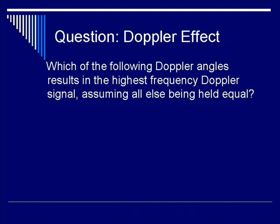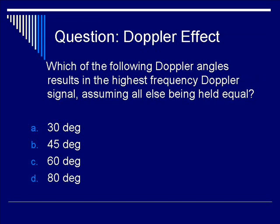Let's end this segment on a question: which of the following Doppler angles results in the highest-frequency Doppler signal, assuming all else being held equal? A: 30 degrees; B: 45 degrees; C: 60 degrees; or D: 80 degrees? The answer is A — 30 degrees — because cosine of 30 gives you the largest value for the cosine factor, which gives you the highest Doppler shift, all else being equal.